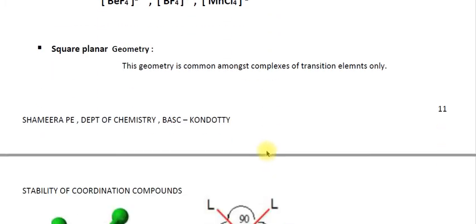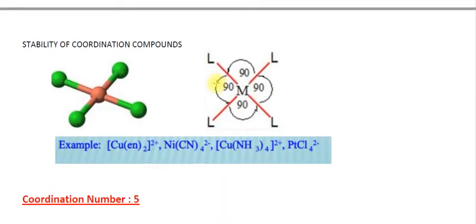Square planar geometry is common amongst the complexes of transition elements only. The metal is connected with 4 ligands and the angle between each ligand is 90 degrees. Examples of square planar complexes are [Cu(en)₂]²⁺, [Ni(CN)₄]²⁻, [Cu(NH₃)₄]²⁺, and [PtCl₄]²⁻.